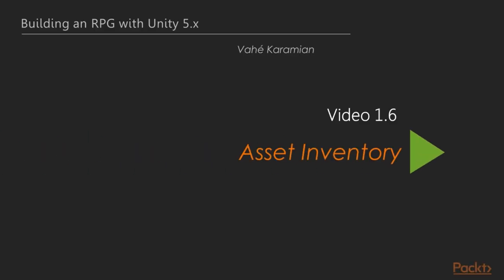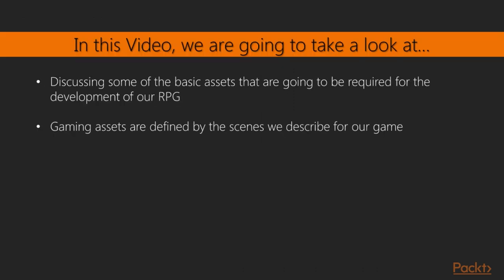Welcome to the next video of section 1, Asset Inventory. In this video, we will discuss some of the basic assets that are going to be required for the development of our RPG. Our game assets are defined by the scenes we describe for our game. For our RPG, we have described four unique scenes. Each one has been described in enough detail to get an idea of the types of assets we are going to require.